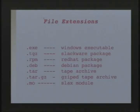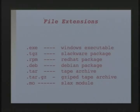In Windows there are file extensions, and in Linux there are file extensions too. .exe is a Windows executable. There are different packages: a Slackware package, a Red Hat package, a Debian package — those are the program configured to run on your version of Linux. TAR is a tape archive: you have a directory with a bunch of files, you tar it and it's one file. You can untar it and there's your directory. .gz means it's been zipped. Slax modules are .mo — that's really important.